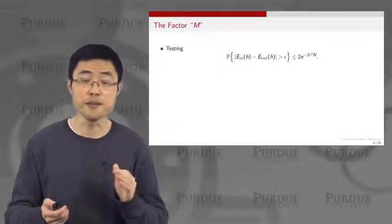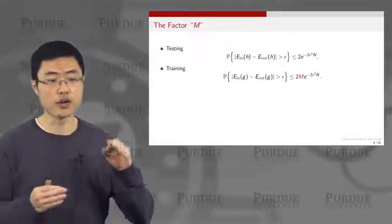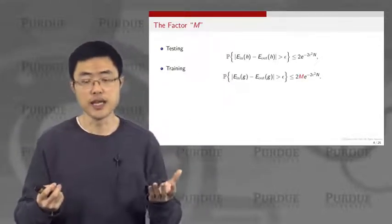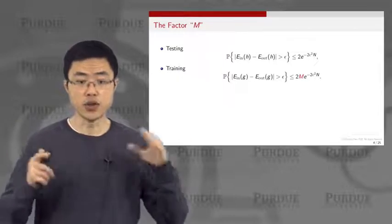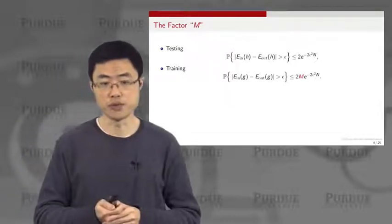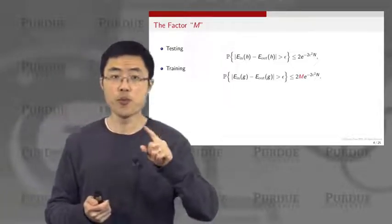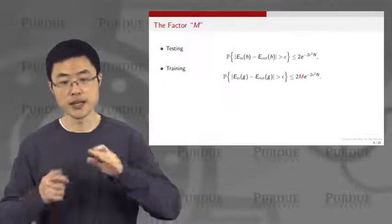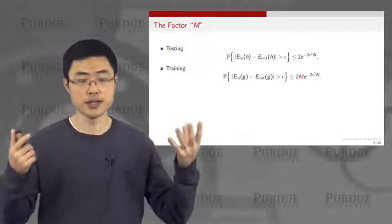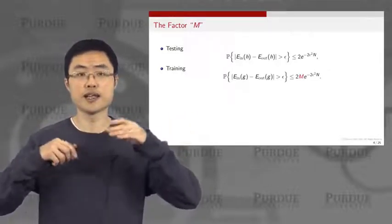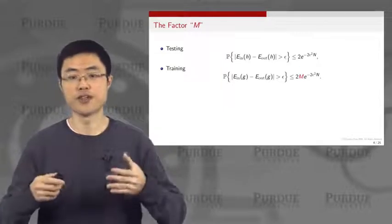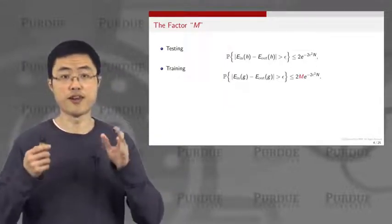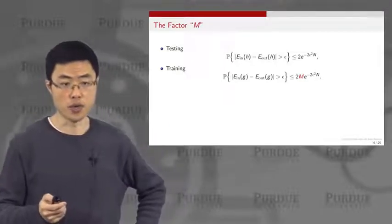We also look at this factor of M. This factor of M comes from the fact that we're looking at not just one hypothesis, but the final hypothesis g, and therefore you will have a factor of M that goes into your training procedure. If you're only looking at one hypothesis h, then you're just looking at testing. But since we're looking at training, we need to look at the entire training data set and the entire hypothesis set, therefore you have a set of M hypotheses to choose from, giving you a factor of M in your Hoeffding inequality.